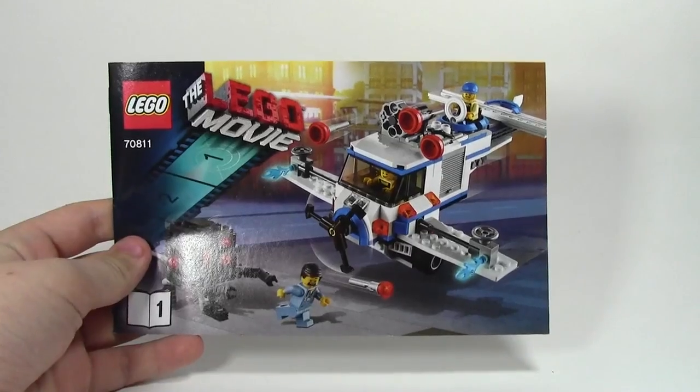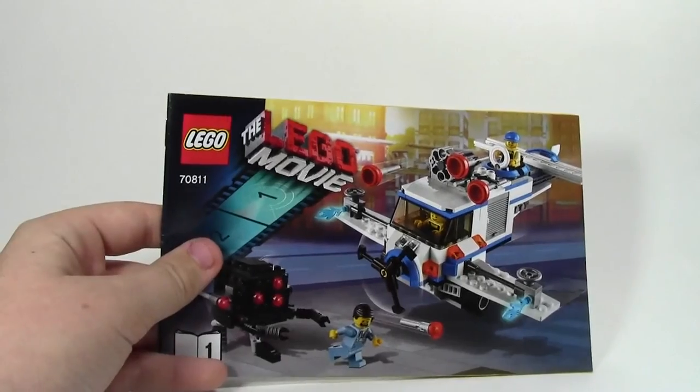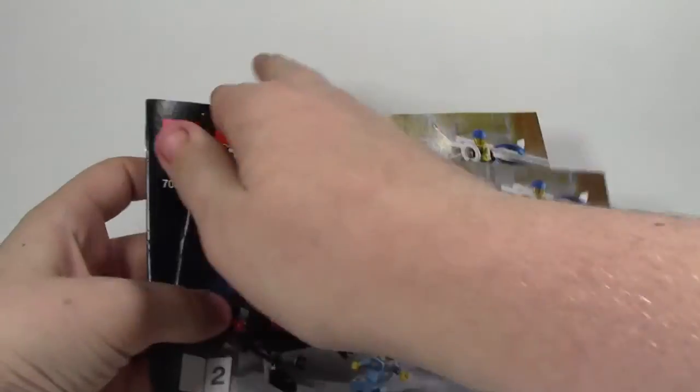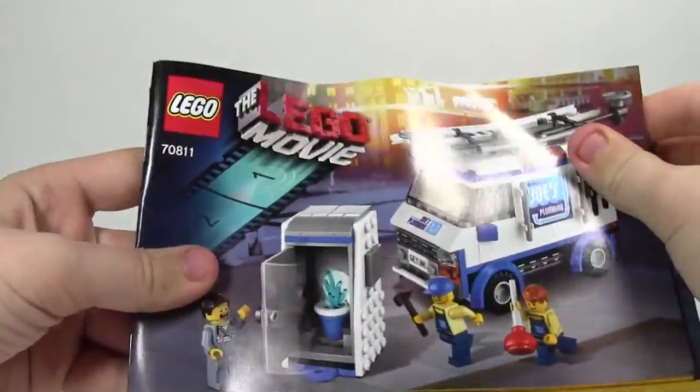The instructions for this set are fairly simple. We have book one for the flying, actual flying flusher. And I believe this is for the Micro Manager. Oops, I dropped one manual. This one is actually for the flying flusher, book two. And book number three is for the truck, which I have made the truck because the truck is more realistic for a city instead of a flying Micro Manager.